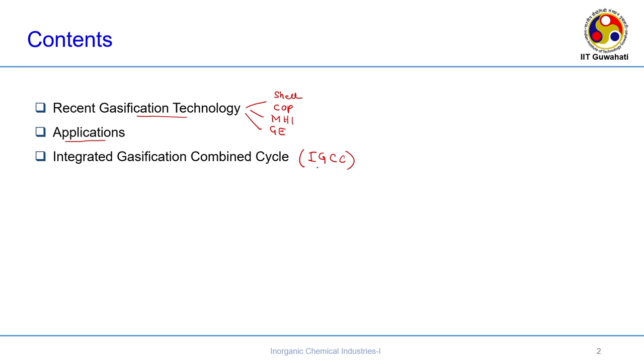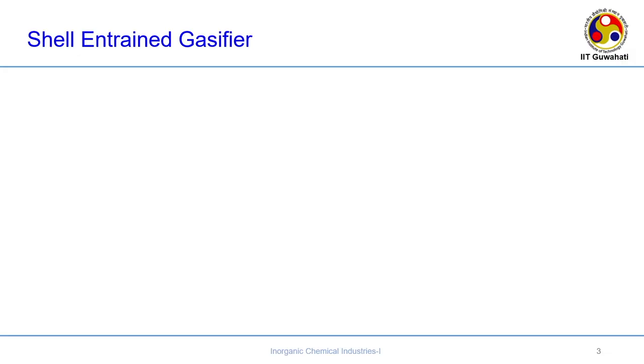In the integrated gasification combined cycle (IGCC), you gasify coal to produce syngas and also power — that is why it is called a combined cycle. You use the syngas to generate power. Now, all the gasifiers we are discussing are entrained flow gasifiers. Let us start with the Shell gasification cycle. These gasifiers differ based on how you introduce the feed: as a dry feed or as a coal slurry. More or less all the gasifiers I am now discussing shall be entrained flow gasifiers.